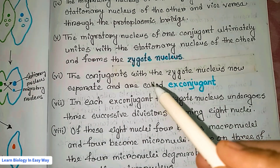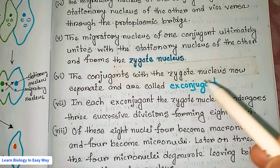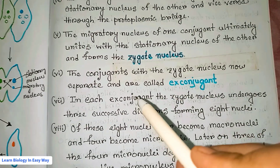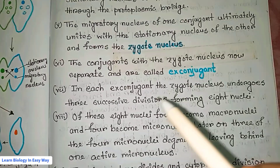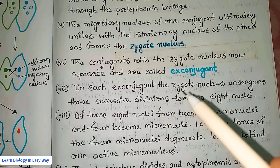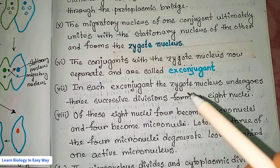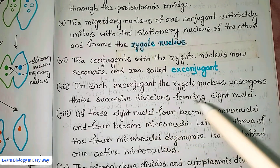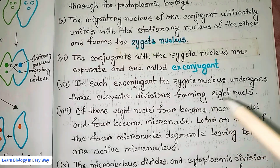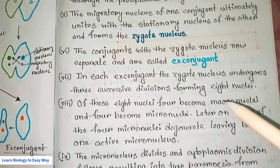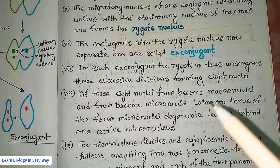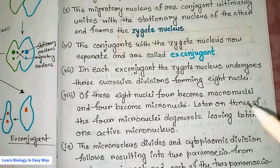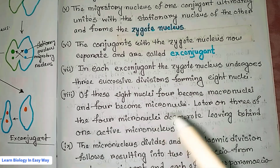The conjugants with the zygote nucleus now separate and are called ex-conjugants. In each ex-conjugant, the zygote nucleus undergoes three successive divisions forming eight nuclei, of which four become macronuclei and four become micronuclei.